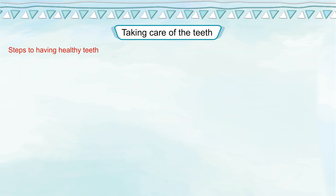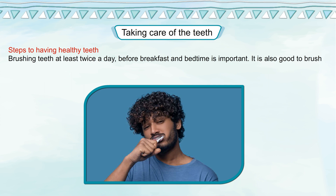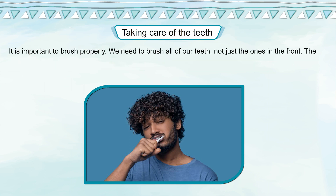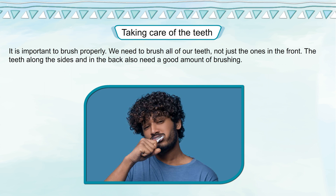Steps to having healthy teeth: brushing teeth at least twice a day, before breakfast and at bedtime, is important. It is also good to brush after eating something sweet and sticky. Brushing properly breaks down plaque. We need to brush all of our teeth, not just the ones in the front — the teeth along the sides and in the back also need a good amount of brushing.